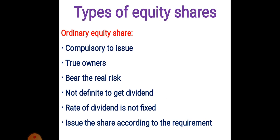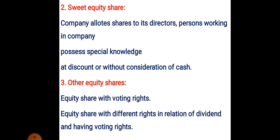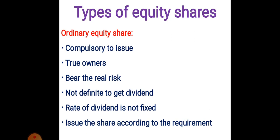Now let us see the types of equity shares. There are three types: ordinary equity shares, sweet equity shares, and other equity shares. Ordinary equity shares are compulsory to issue because a company cannot start without equity shares. Ordinary equity shares are those which must be published first and are compulsory to be issued. That is why ordinary equity shareholders are called true owners of the company because they take the highest risk and their dividend rate is not fixed, being directly related with the profit.